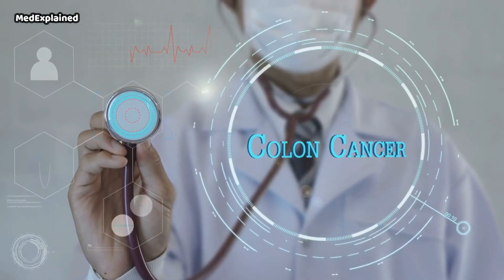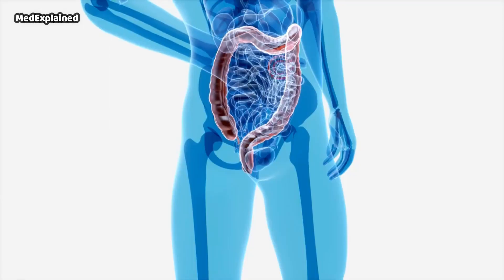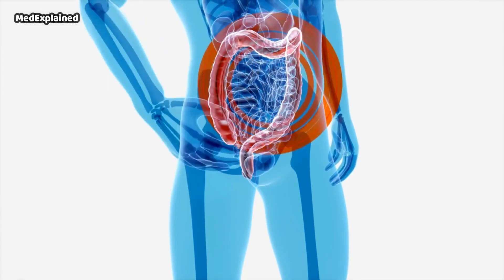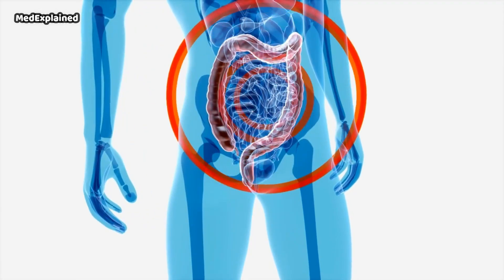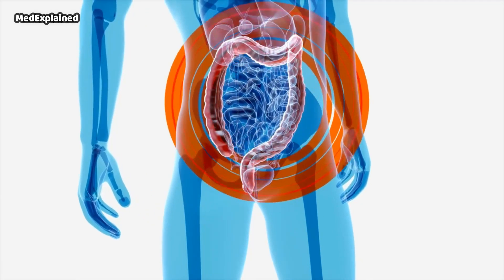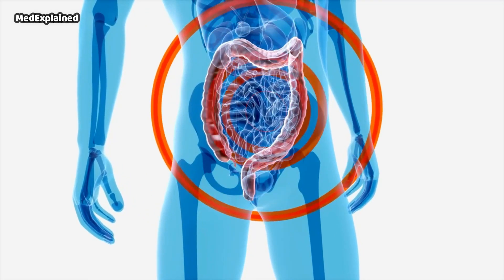If colon cancer spreads to other parts of your body, you may also experience jaundice or yellow eyes and skin, swelling in the hands or feet, breathing difficulties, chronic headaches, blurry vision, or bone fractures. Many people with colon cancer experience no symptoms in the early stages of the disease. When symptoms appear, they likely vary depending on the cancer's size and location in your large intestine.